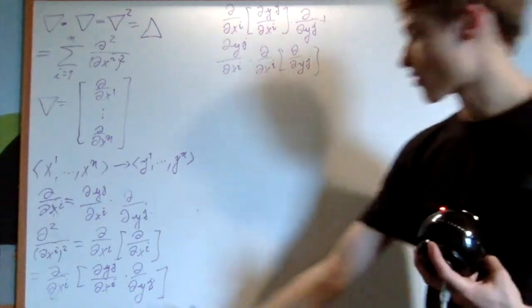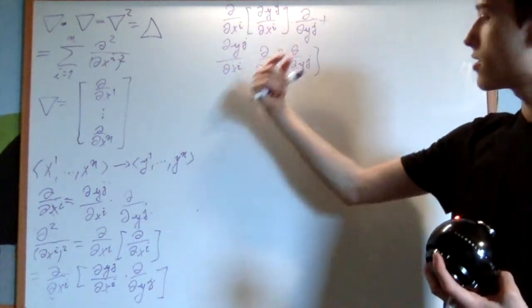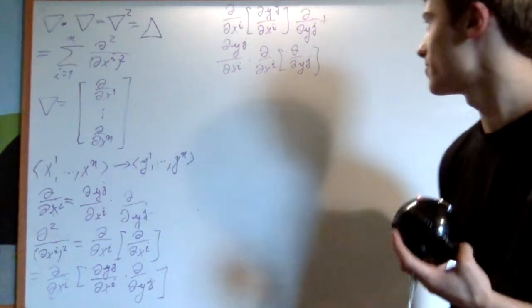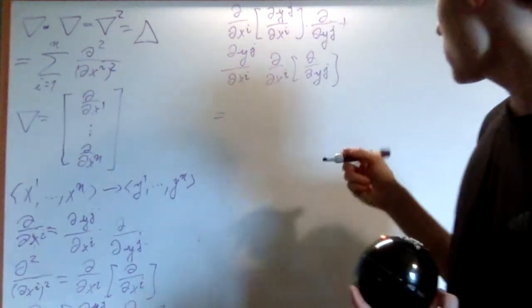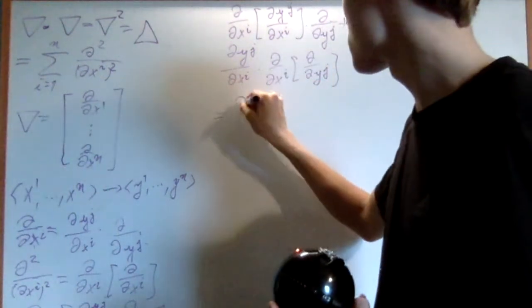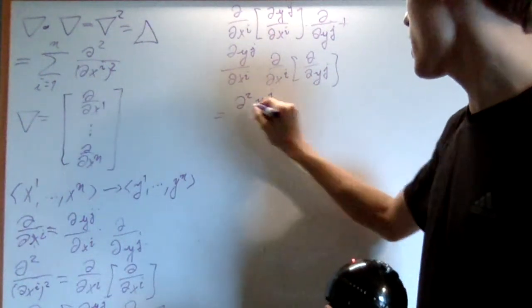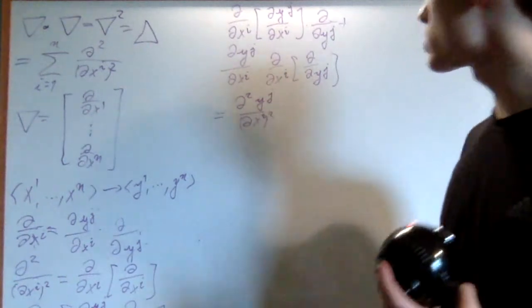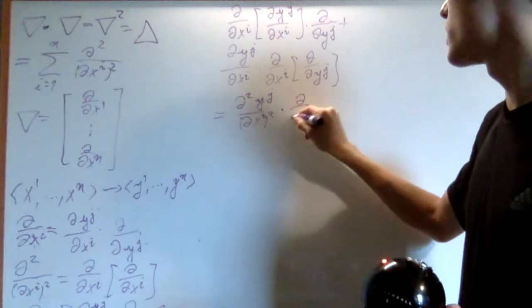Partial derivative applied to the first value times the second value, and then the first value times the partial derivative applied to the second value. And then from here, it's going to be equal to - that right there is just del squared yj on del xi squared. That's just the definition of that, multiplied by del on del yj.